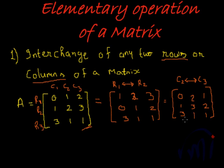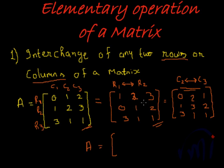You should also remember that the second operation of column interchanging can also be done on this and we will still get the same nature of the matrix. That means A is also equivalent to, say, doing a column interchange which gives 1 0 3, 3 2 1, 2 1 1.